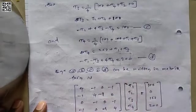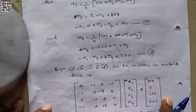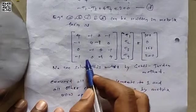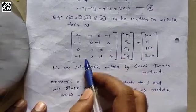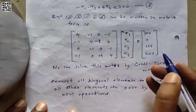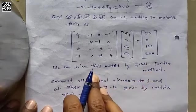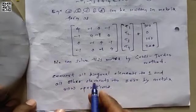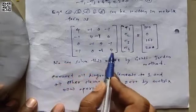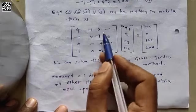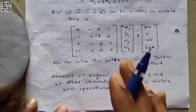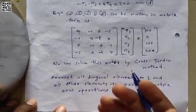These four simultaneous equations are written in matrix form. Now we solve this matrix by the Gauss-Jordan method. The Gauss-Jordan method requires converting all diagonal elements to 1 and all off-diagonal elements (lower and upper triangular) to zero, using matrix row operations. Starting with the first diagonal element of 4, we divide row R1 by 4 to make it 1.